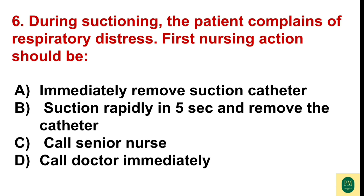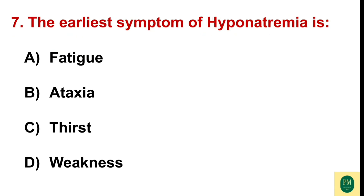The correct option is Option A — immediately remove the suction catheter. The earliest symptom of hyponatremia is: Option A: fatigue. Option B: ataxia. Option C: thirst. Option D: weakness. The correct option is Option A — fatigue.